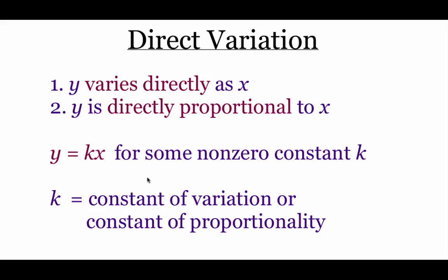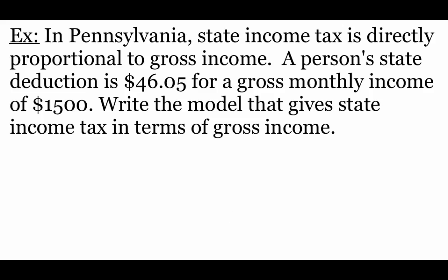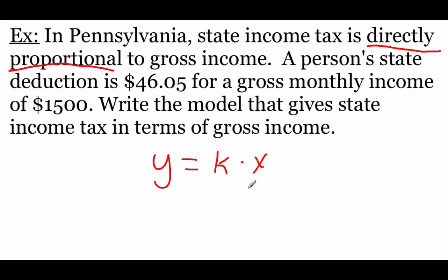A lot of times that k value is what we're trying to find. Let's take a look at this example. In Pennsylvania, state income tax is directly proportional to gross income. One person has a deduction of $46.05 and a gross monthly income of $1,500. We want to write a model that gives state income tax in terms of gross income. Since it's directly proportional, we're dealing with y equals k times x, and we need to find k.